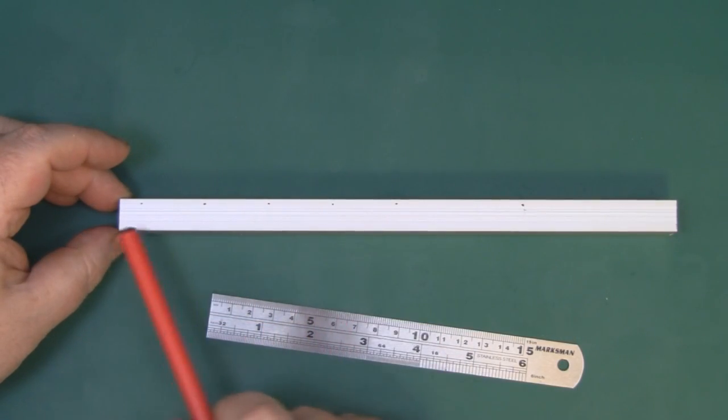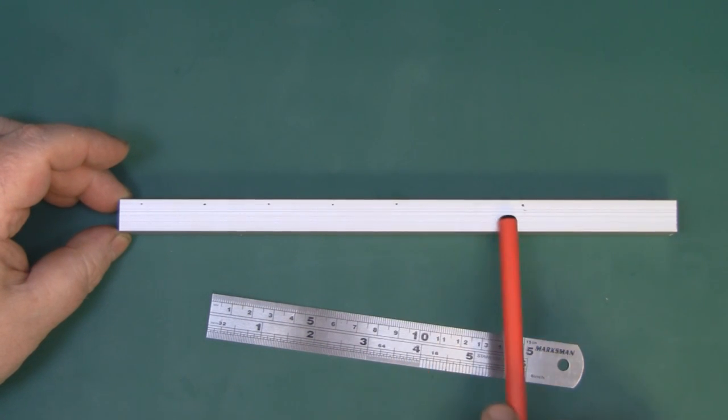I've measured from the edge of the box tubing here, 10 millimeters, and put my first mark for the first parasitic element. The rest have 30 millimeter spacing in between, and the space to the back reflector is 60 millimeters.